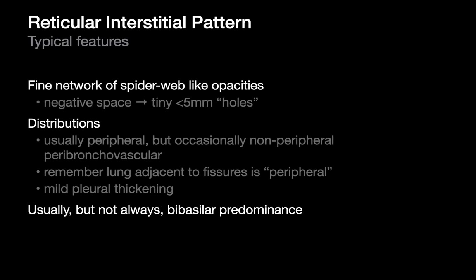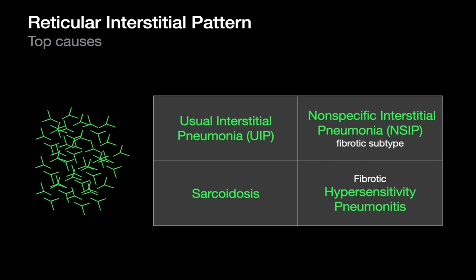To recap typical features of a reticular interstitial pattern: things that look like spider webs where the negative spaces between the lines are tiny, distributions tend to be peripheral but not always, and these tend to favor the lower lungs but not always. If I encounter a reticular interstitial pattern on CT or chest x-ray, the top four answers are: UIP, the fibrotic subtype of NSIP, sarcoid, and fibrotic HP. These are probably the top four things to think about.